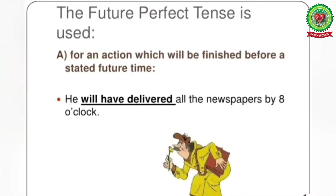The future perfect tense is used for an action which will be finished before a stated future time. For example, 'He will have delivered all the newspapers by 8 o'clock.' Here, 'will have delivered' is your future perfect tense.